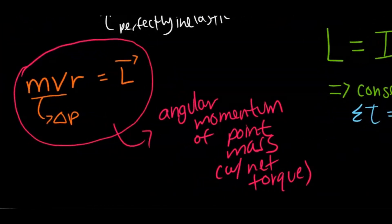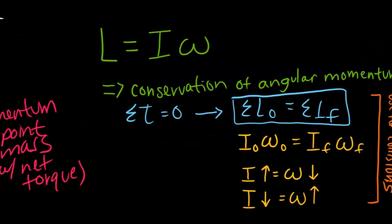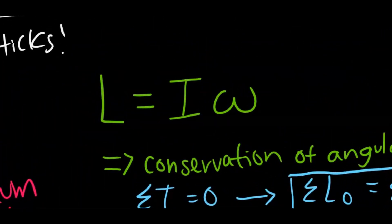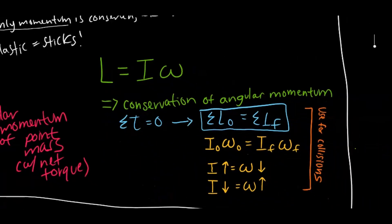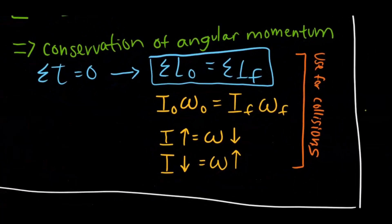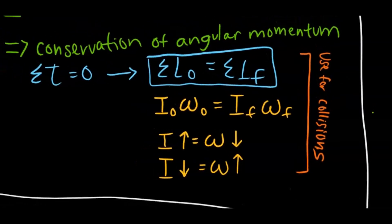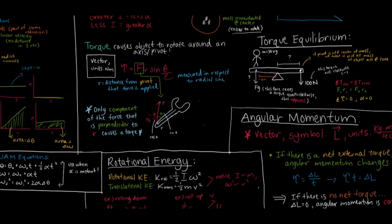The angular momentum of a point mass is mvr — linear momentum times radius. The standard angular momentum equation is L equals moment of inertia times angular velocity. For conservation of angular momentum with no net torque: moment of inertia times angular velocity equals final moment of inertia times final angular velocity — just like mv equals mv for linear momentum.